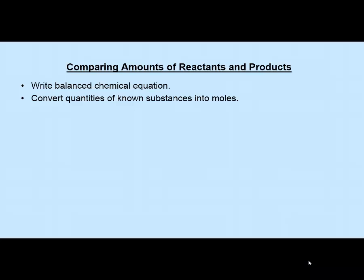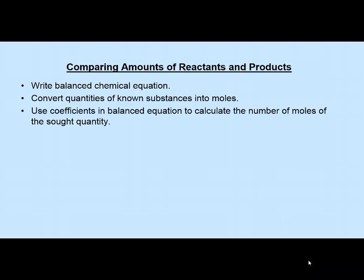We can compare reactants to reactants, reactants to products, products to other products, or products back to reactants—any stoichiometric ratio from any coefficient. But we must get to moles first: converting from grams to moles using molar masses, or from number of particles to moles using Avogadro's number. Once we balance equations and find the coefficients, we can calculate moles of another substance by comparing coefficients. We can then convert moles of the substance we solved for back to grams using molar mass, or to number of particles using Avogadro's number.